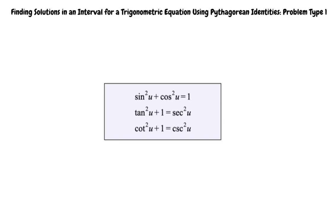This video covers the topic, Finding Solutions in an Interval for a Trigonometric Equation Using Pythagorean Identities, Problem Type 1.